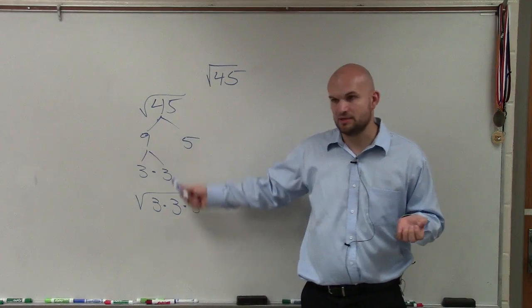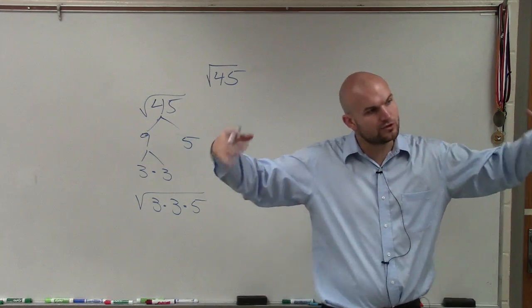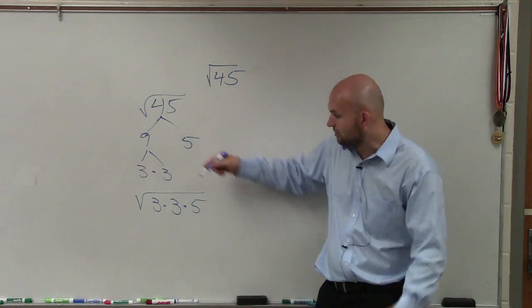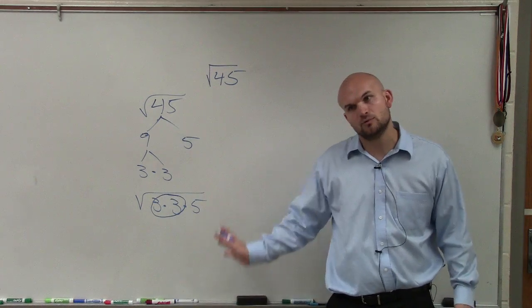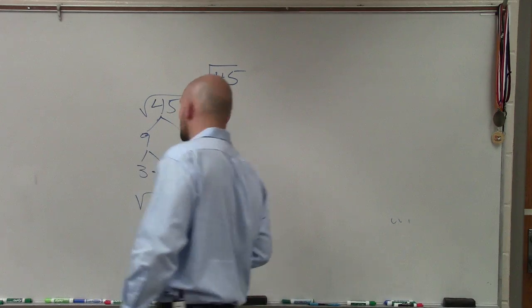Do you guys agree with me on what I did? Now, what we talked about was when you're taking the square root, the square root means taking what number multiplied by itself? The square root of 3 times 3, when we have that pair for the square root, we can take out that pair. So my final answer was 3 square root of 5.